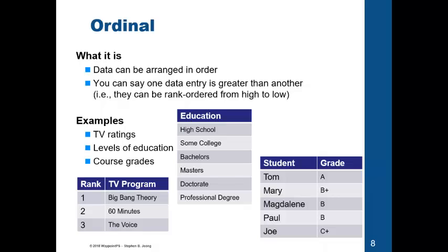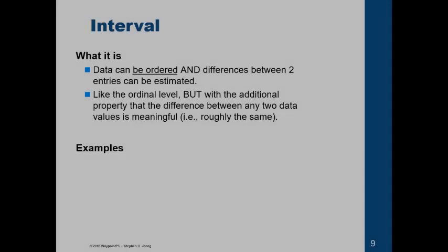Because here, with ordinal level of measurement, one weakness is that we cannot say that the distance between the data points are equal. So, we cannot say that the difference between bachelors and a masters degree is equal to masters and a doctorate level. We can say, although we can order them from high to low, we cannot say that the distance is equal, or roughly equal.